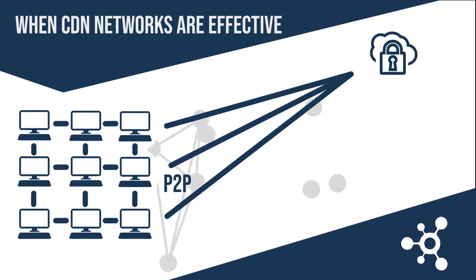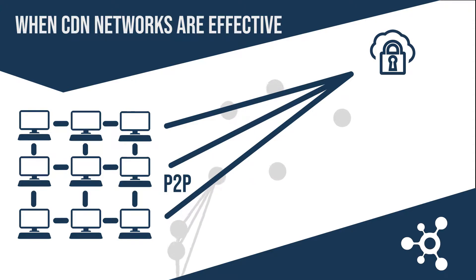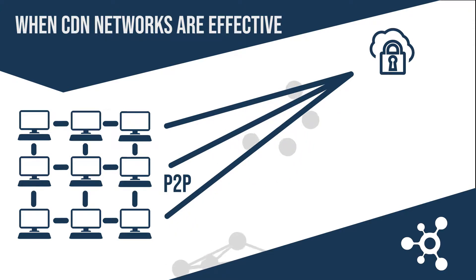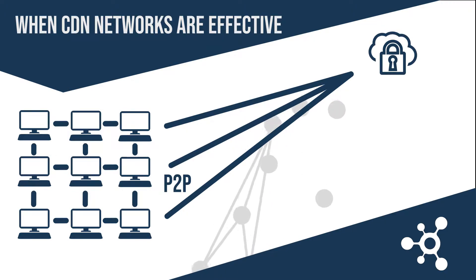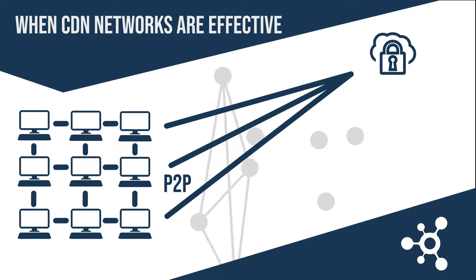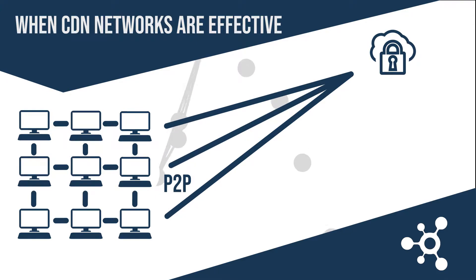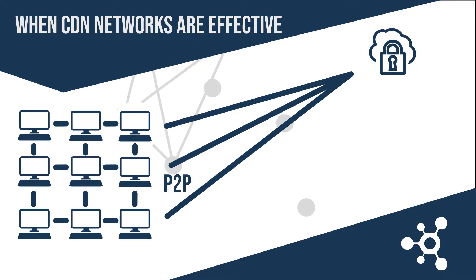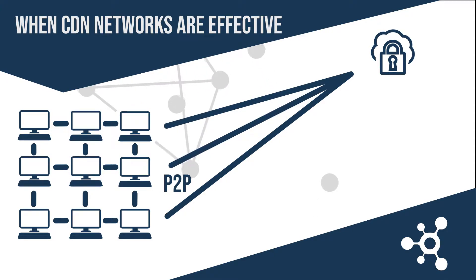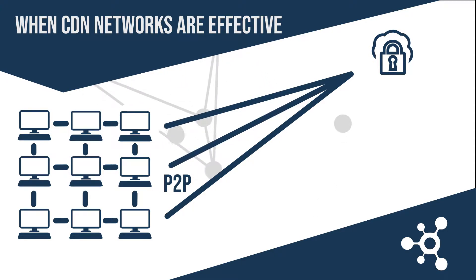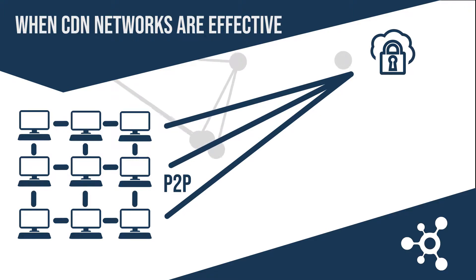A peer-to-peer network allows for the distribution of any kind of data among all connected devices rather than forcing each device to load updates from one overloaded source, that is the server. The information in a peer-to-peer network can be transmitted very quickly because each node can connect to several other nodes and transmit data. Even if each node can exchange data with only two other nodes, the volume of data passing through the network grows exponentially.